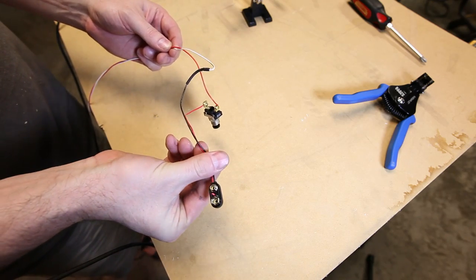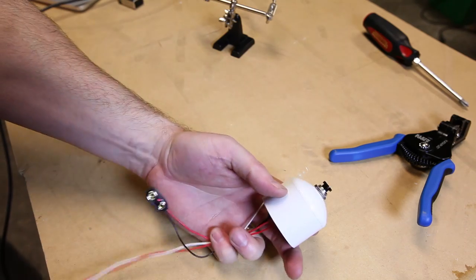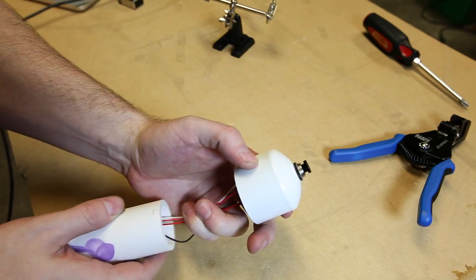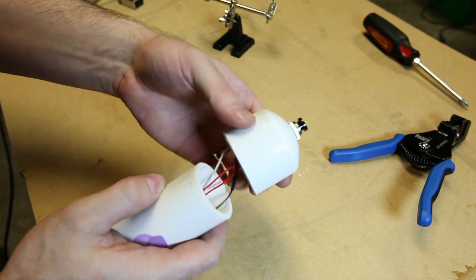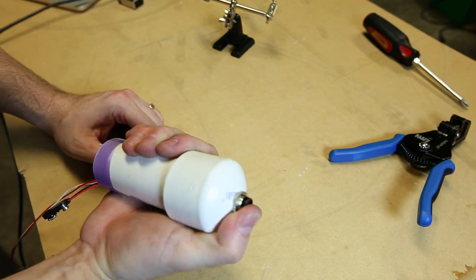Once finished, it should look like this. Next we mount the momentary switch through the hole we drilled earlier in the 1-1-1-4-inch PVC cap, and then slide the wire through the 5-inch length piece of pipe.